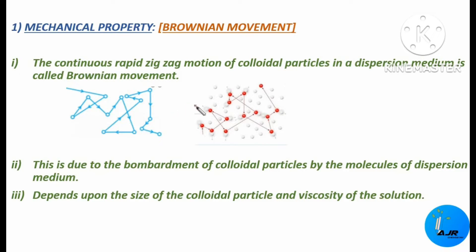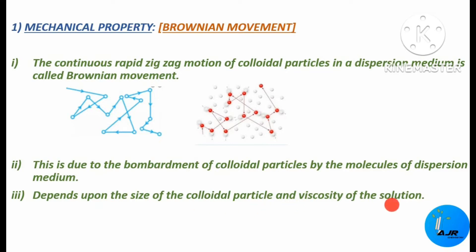This type of Brownian motion is independent of the nature of the colloids, but it depends upon the size of the particle and also the viscosity of the solution. This Brownian motion has a stirring effect which does not permit the colloidal particles to settle down — it will never allow the colloidal particles to settle down.